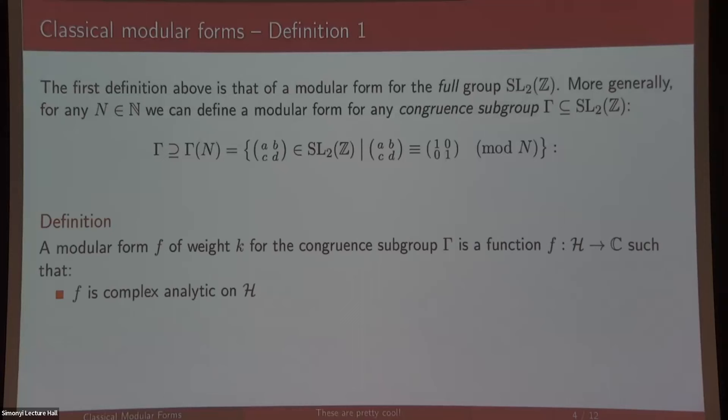It has to be nice and complex analytic. Previously f slashed with any matrix should stay the same for any matrix in SL₂(Z). Here we're only requiring that for gamma in whichever subgroup we've chosen, so there are fewer conditions. To compensate, we have to strengthen the boundedness condition saying that each of these slashes are all bounded as the imaginary part goes to infinity. This is usually phrased as being holomorphic at the cusps.